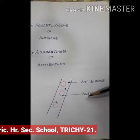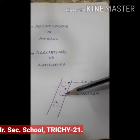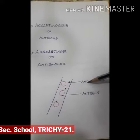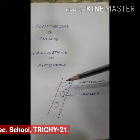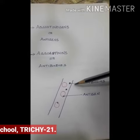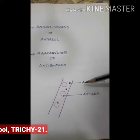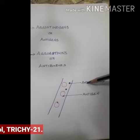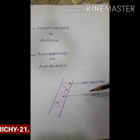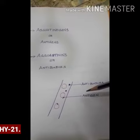Antigens are found on the membrane surface of the RBC. Antibodies are present in the blood plasma. Based on the presence of antibodies and antigens, human blood is classified into four groups: A, B, AB, O.